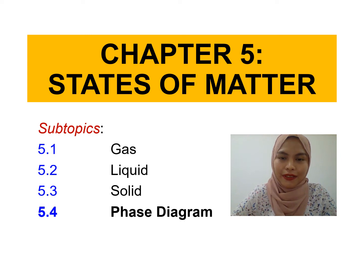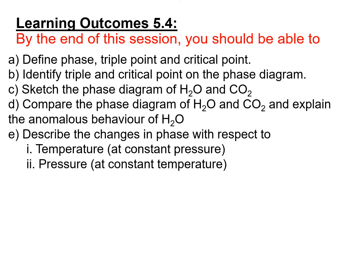We have now reached the end of chapter 5, which is about phase diagrams. Here are the learning outcomes for 5.4. By the end of the lessons, you should know how to define phase, triple point, and critical point; identify triple and critical point on the phase diagram; sketch the phase diagram of H2O and CO2; compare the phase diagram of H2O and CO2; and explain the anomalous behaviour of H2O, as well as describe the changes in phase with respect to temperature and pressure.